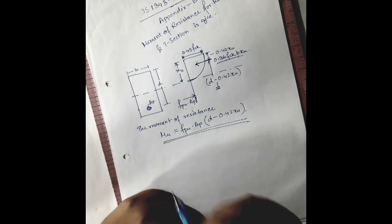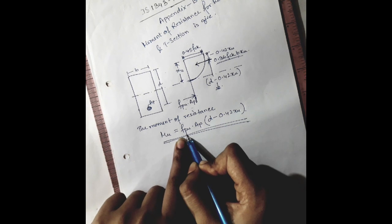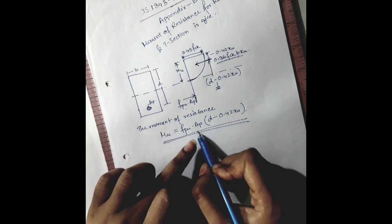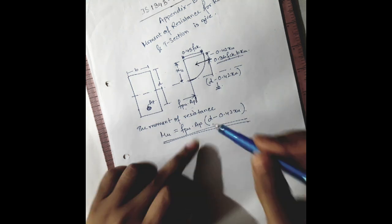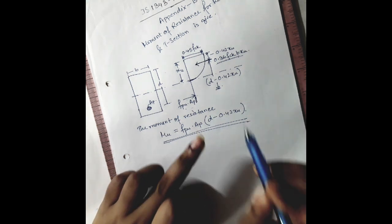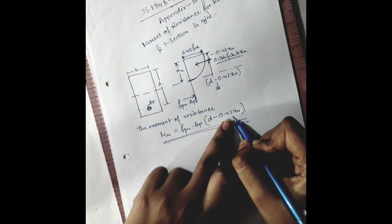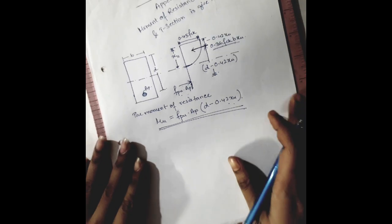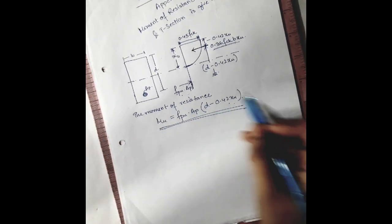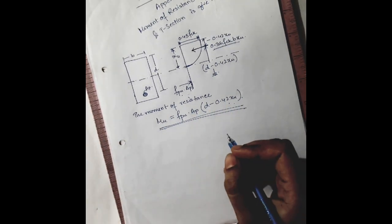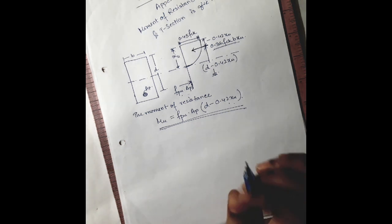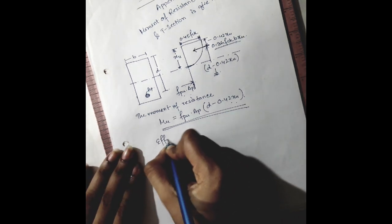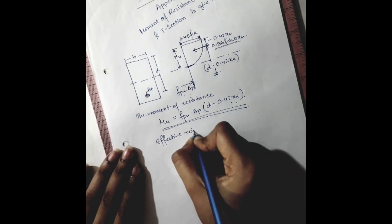The force times the perpendicular distance is making this moment to resist this section. So this is our equation of moment of resistance, where fpu is the tensile stress developed in tendons, Ap is the area of the pre-stressing tendons, D is the effective depth, and 0.42 times xu is the neutral axis depth. From here we have got the moment of resistance equation. Now the important factor we need to know is the effective reinforcement ratio.